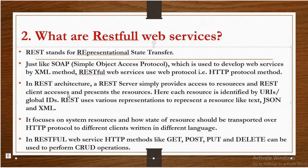RESTful web services support both JSON and XML. In REST architecture, a REST server simply provides access to resources and the REST client accesses and presents the resources. Each resource is identified by URIs. REST uses various representations to represent a resource like text, JSON, and XML. It focuses on system resources and how the state of a resource should be transported over HTTP protocol to different clients written in different languages, so it is language independent.